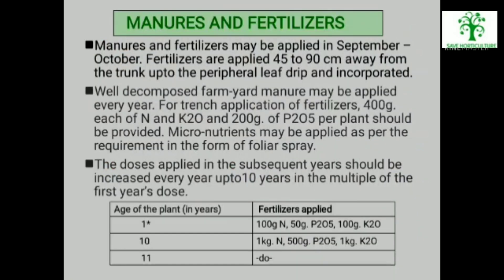Manures and Fertilizers: Manures and fertilizers may be applied in September to October. Fertilizers are applied 45 to 90 cm away from the trunk up to the peripheral leaf drip and incorporated. Well-decomposed farmyard manure may be applied every year. For trench application of fertilizers, 400 gm each of nitrogen and K₂O and 200 gm of P₂O₅ per plant should be provided. Micronutrients may be applied as per requirement in the form of foliar spray. The doses applied in subsequent years should be increased up to 10 years in multiples of the first year's dose.